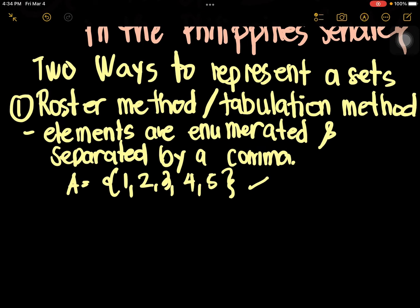In the roster method, you have enumerated or listed the elements in the set, and each element is separated by a comma. That is the roster method.